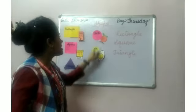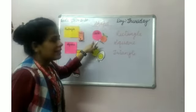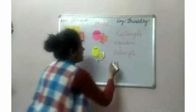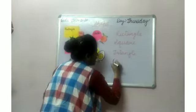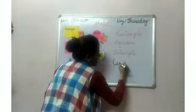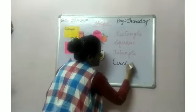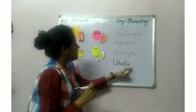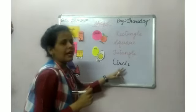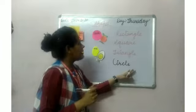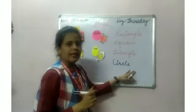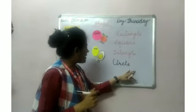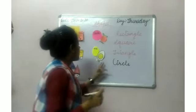Next is circle — very easy spelling. C-I-R-C-L-E. Circle. C-I-R-C-L-E. Circle.